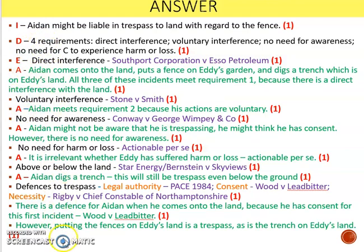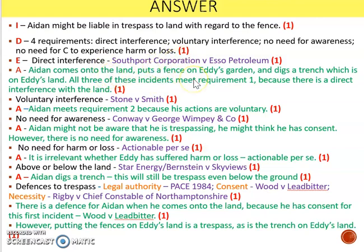The examiner can see I'm demonstrating both skills being assessed. There were lots of issues in that scenario, but you can see how I've tackled them. Once I've explained direct interference, I've applied it: Aiden comes onto the land, he puts a fence on the garden, and he digs a trench — all of those are a direct interference. It's not happened indirectly like in Southport Corporation, where petrol traveled a long way before it ended up on someone's garden. This was directly placed onto Eddie's land, so it meets that requirement.